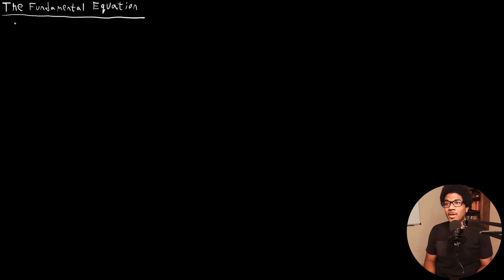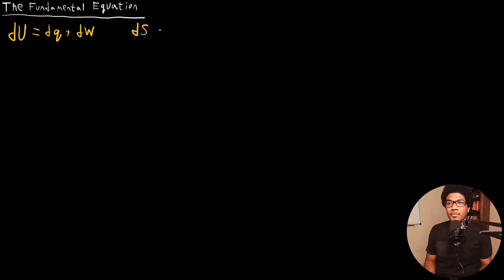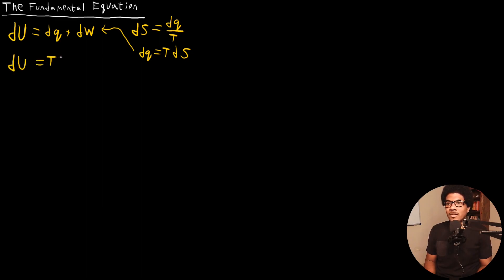So how do we do that? Let's start with the basics. The first law of thermodynamics is dU = dQ + dW. Now if we consider a reversible process, we know we can re-express dQ in the following fashion. We have a definition for entropy — we know that entropy is just equal to dQ over T for a reversible process. So we know we can re-express dQ as TdS. If we make that substitution in the first law of thermodynamics, we get what's called the fundamental equation: dU = TdS + dW. And since we always consider pressure-volume work, the fundamental equation is usually written as dU = TdS - PdV.